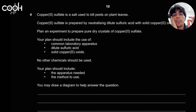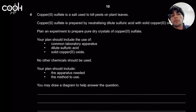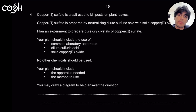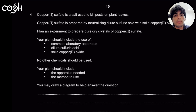Copper sulfate is a soluble salt other than those of group 1 or ammonium. Group 1 soluble salts and ammonium salts are prepared through titration. But other than that, when you have soluble salts, you prepare them through the excess method.